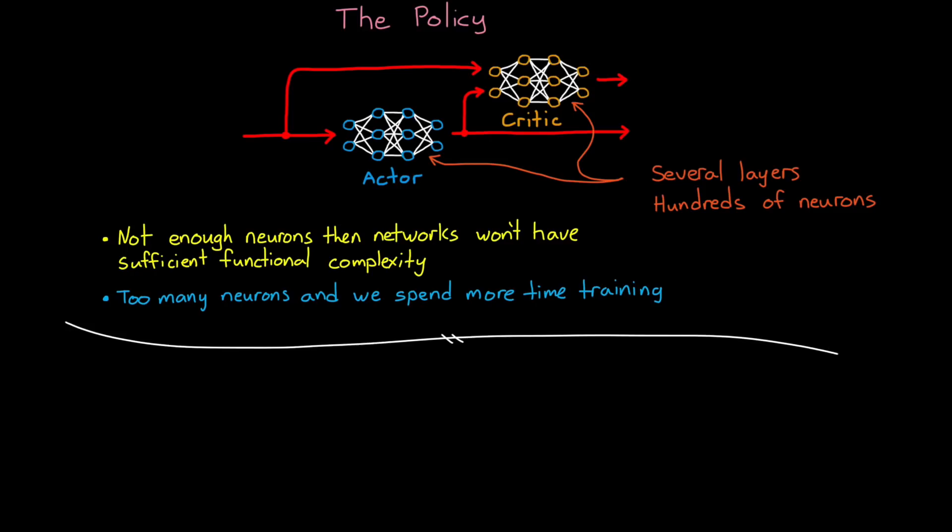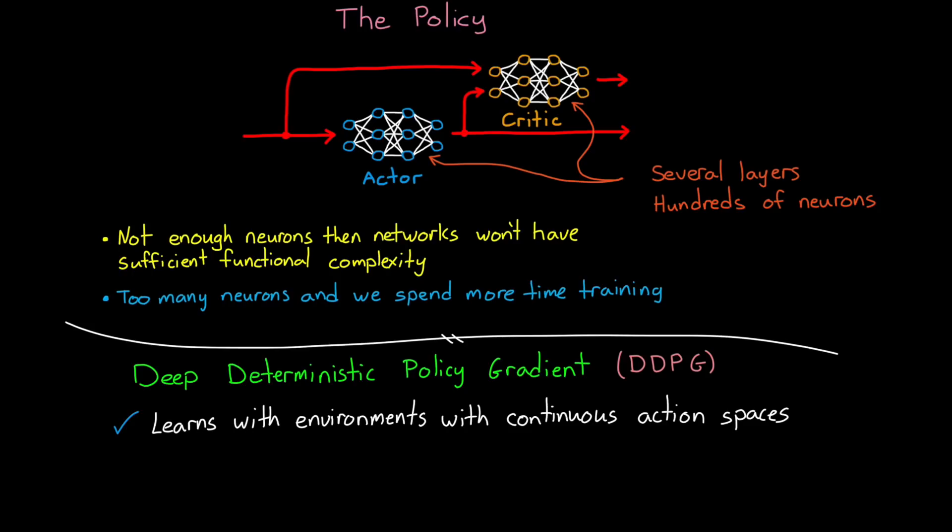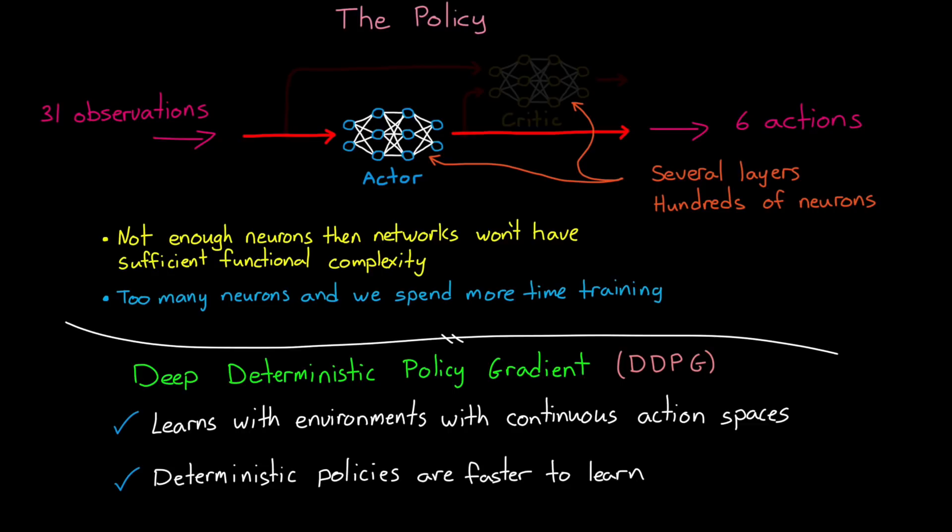Luckily, as we know, we don't need to manually solve for the hundreds of thousands of weights and biases in our networks. We let the training algorithm do that for us. In this example, we're using an actor-critic training algorithm called the Deep Deterministic Policy Gradient, or DDPG. The reason is because this algorithm can learn with environments with continuous action spaces, like we have with the continuous range of torques that we can apply to the motors. Also, since it estimates a deterministic policy, it's much faster to learn than one that learns a stochastic policy. I know this all sounds fairly complicated and abstract, but the cool thing to me about this is that most of the complexity is there for training the policy. Once we have a fully trained agent, then all we have to do is deploy the actor network to the target hardware. Remember, the actor is the function that maps observations to actions. It's the thing that's deciding what to do. It's the policy. The critic and the learning algorithms are just there to help determine the parameters in the actor.